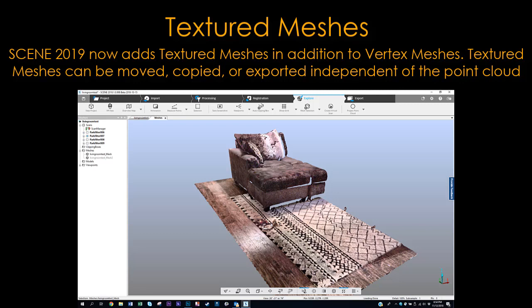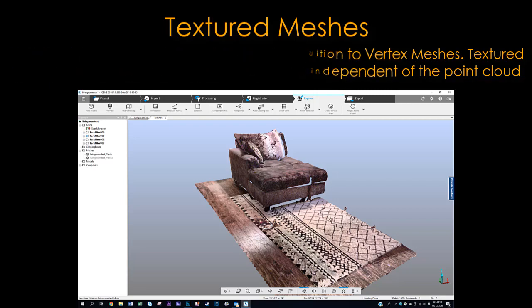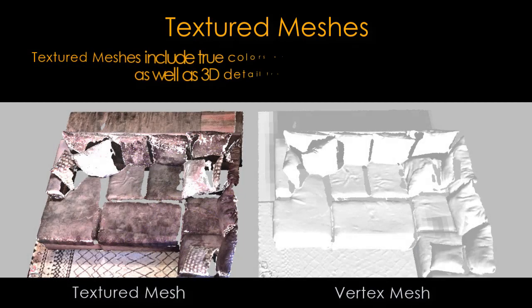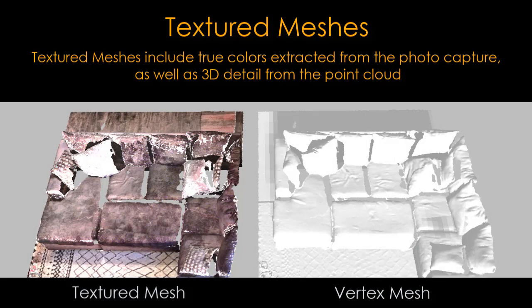Textured meshes: Scene 2019 now adds textured meshes in addition to vertex meshes. Textured meshes can be moved, copied, or exported independent of the point cloud. They include true colors extracted from the photo capture as well as 3D detail from the point cloud.